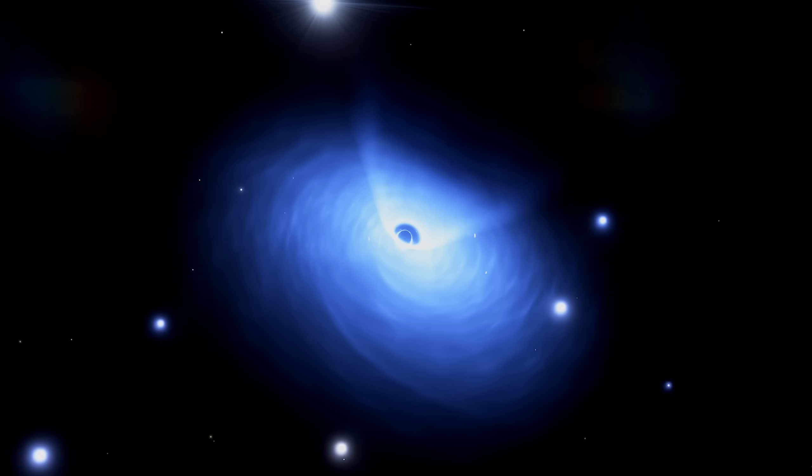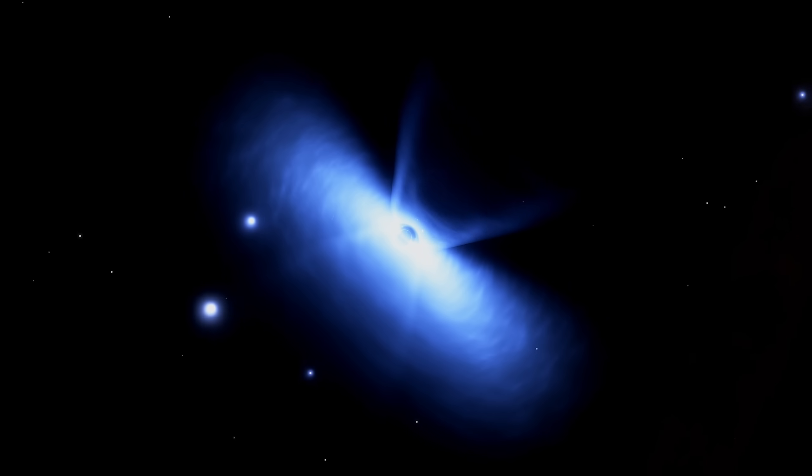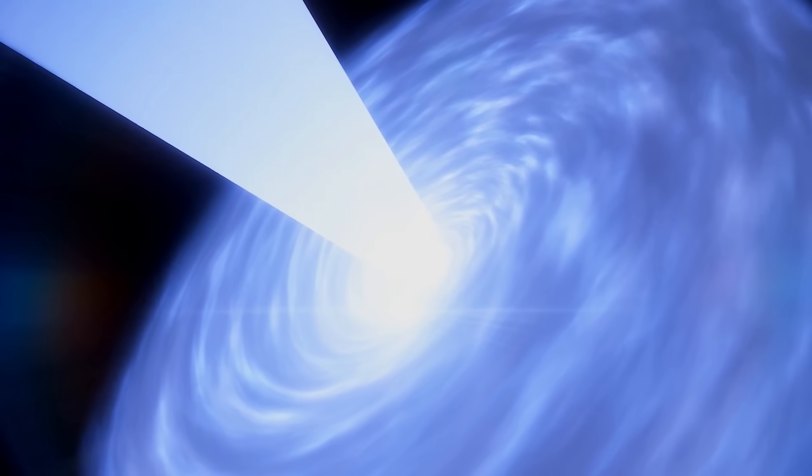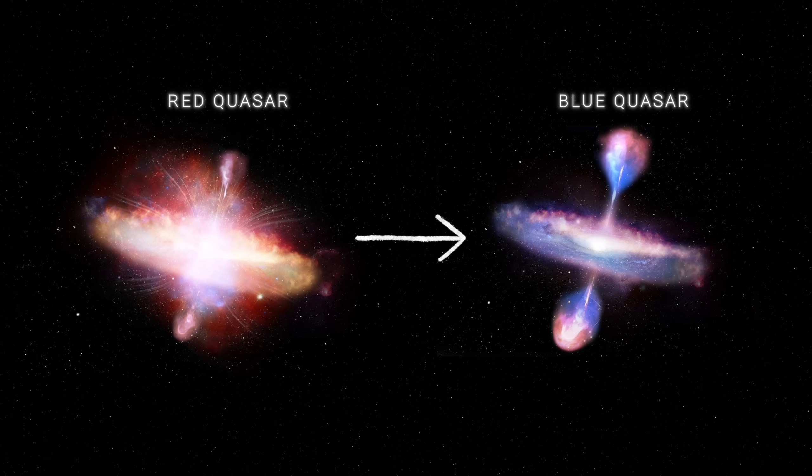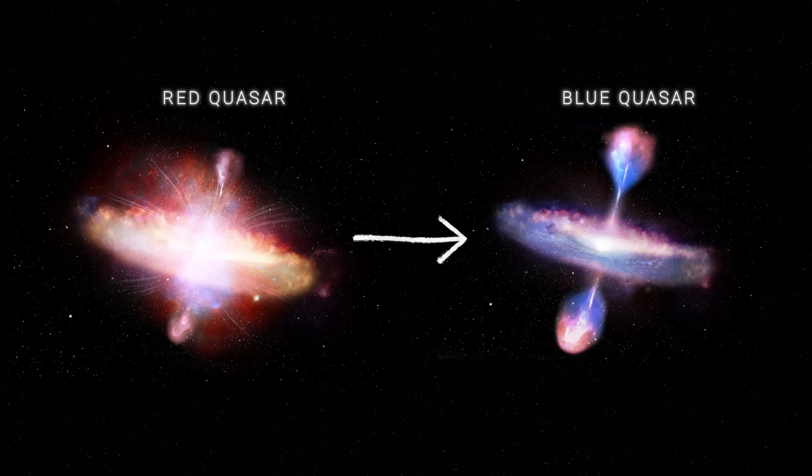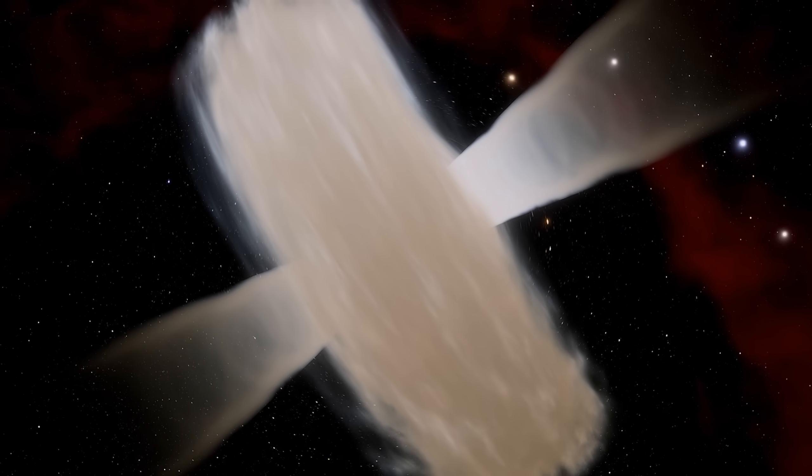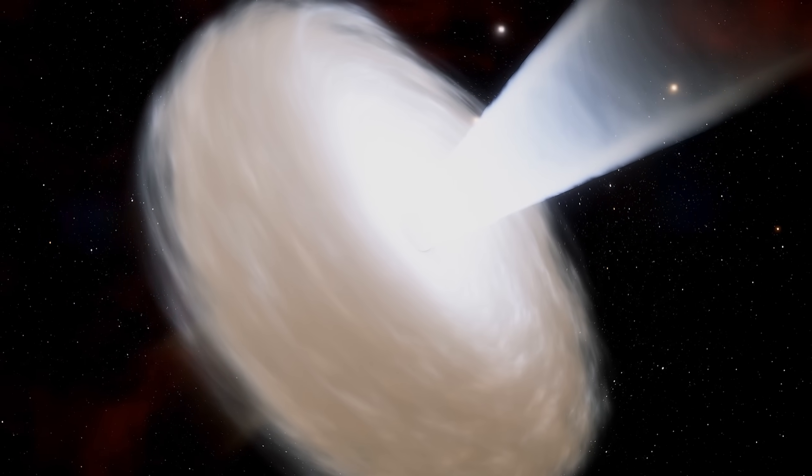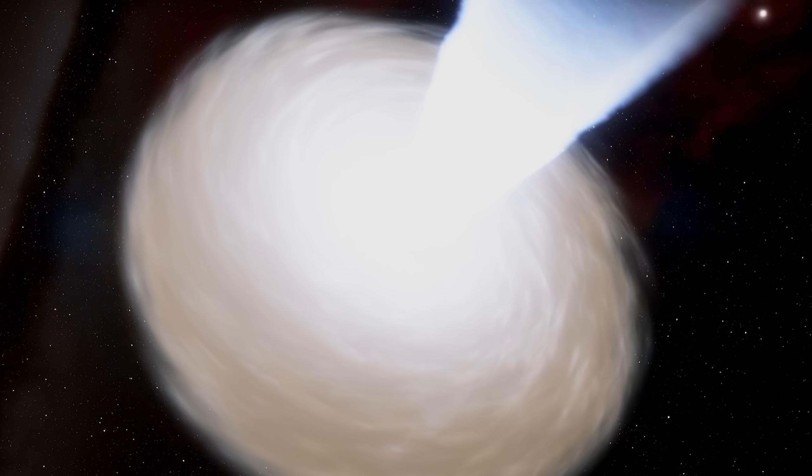As the supermassive black hole continues to feed, its streams gradually blow away this dusty veil, revealing in its place a blue quasar with a much fainter radio emission. This blowout phase refers to the evolution of a quasar from a dusty, radio-loud formation to a cleaner, bluer quasar with muted radioactivity. Observing red quasars gives astronomers a glimpse into the early stages of this transformation and provides valuable insights into the mechanisms that govern the evolution of galaxies.